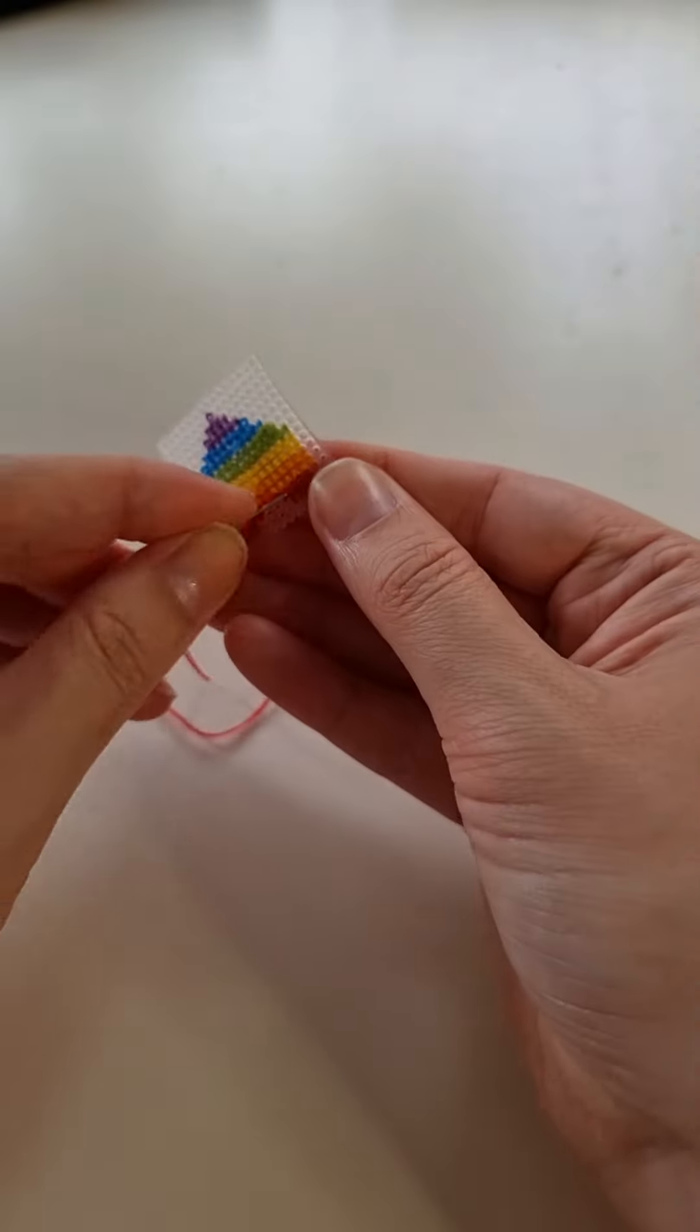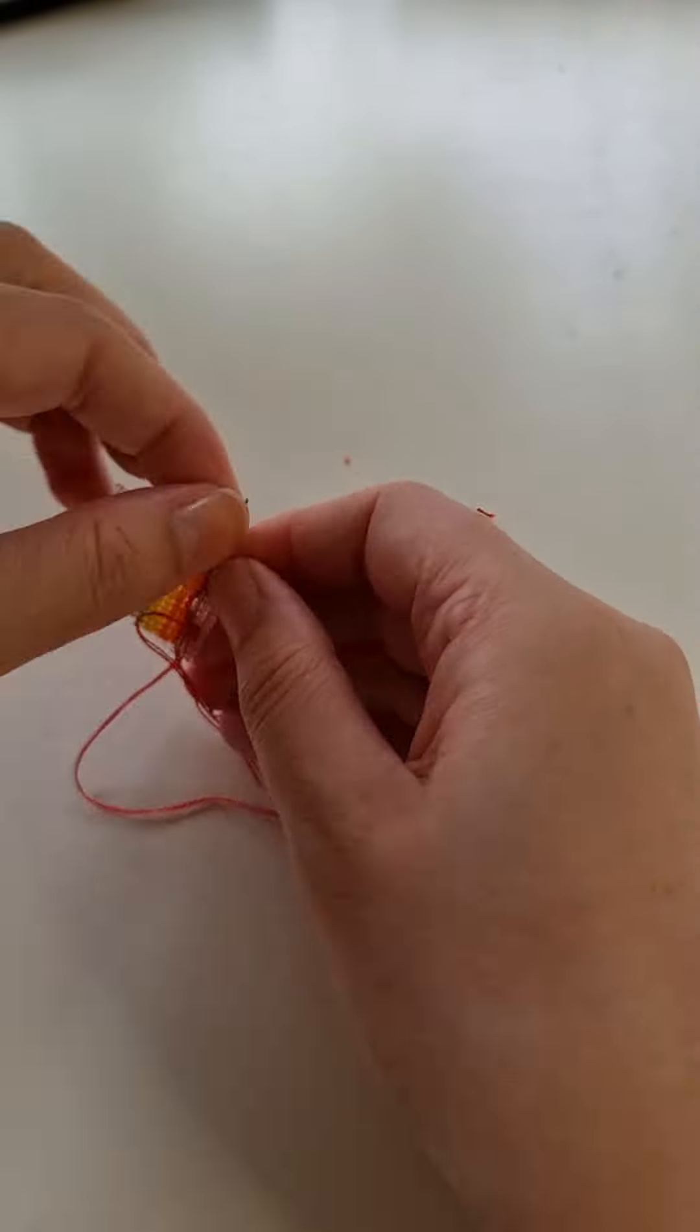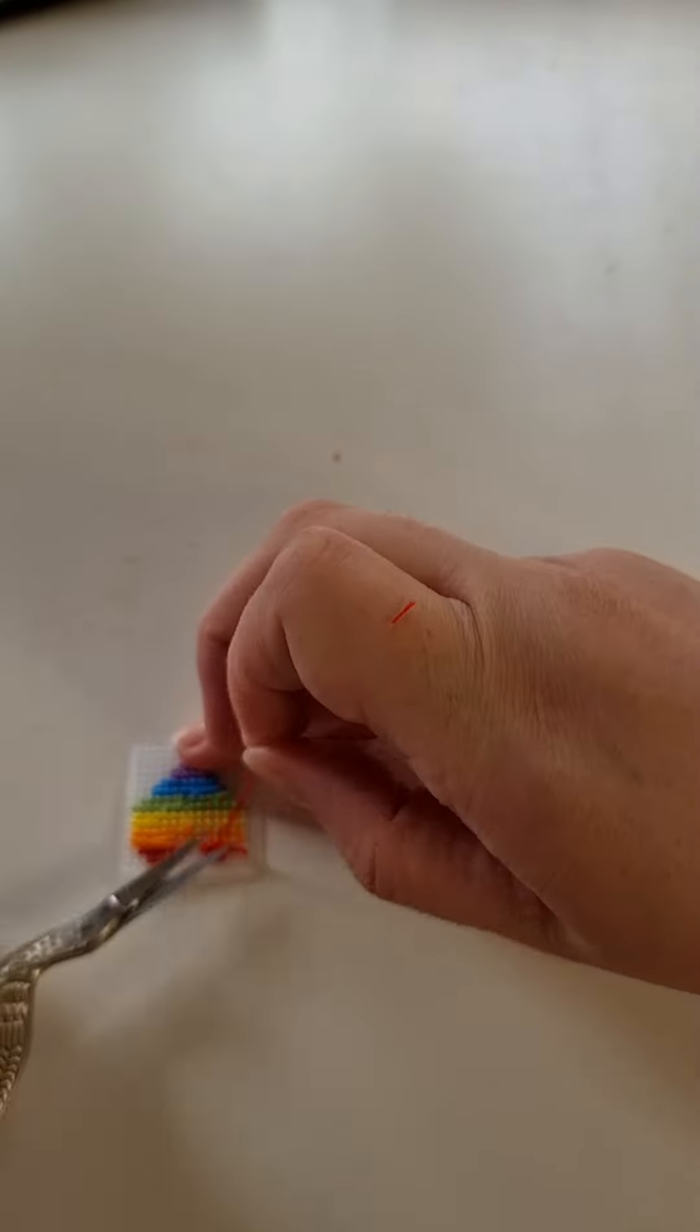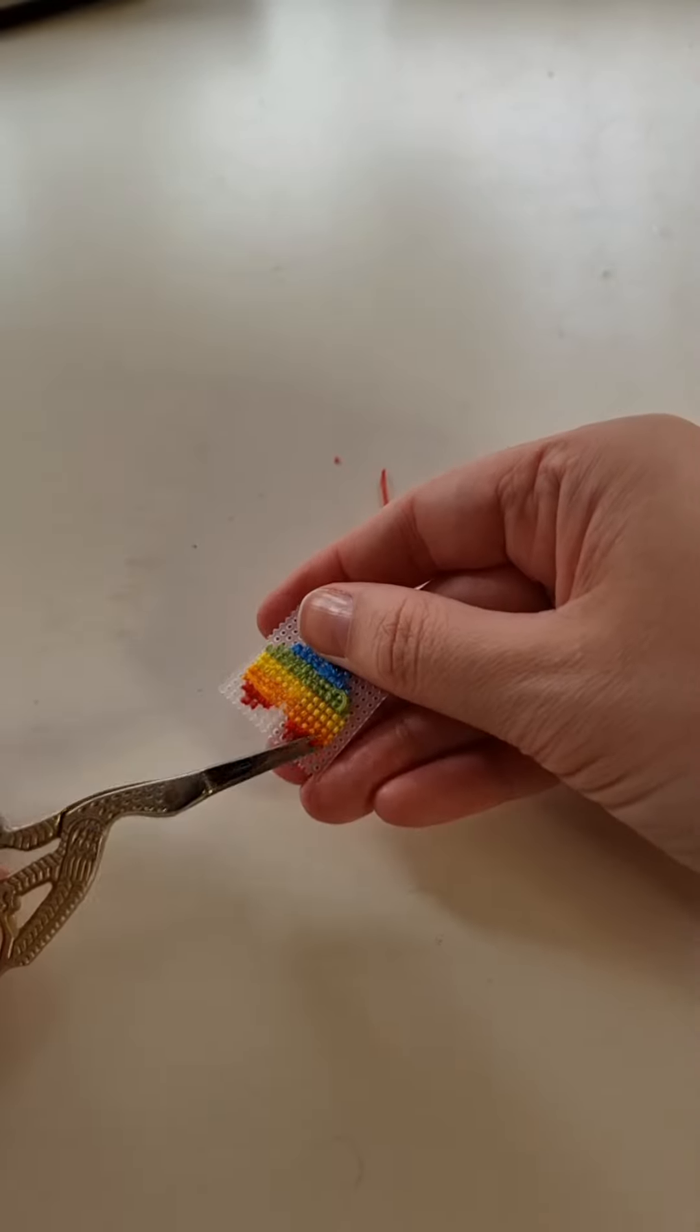When you finish stitching all of your colors secure the thread at the back of your project and snip off the excess. Tidy up the threads at the back if you need to.